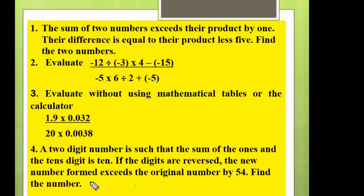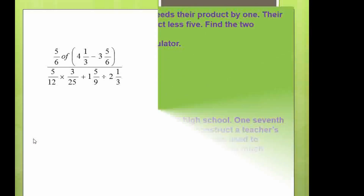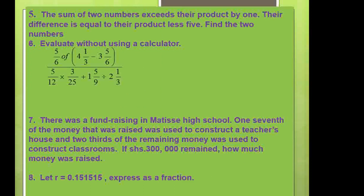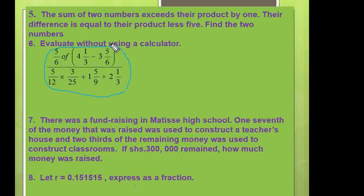You can go ahead and write down those assignments in your exercise book. Question number five: the sum of two numbers exceeds their product by one; their difference is equal to their product less five — find the two numbers. Question number six: evaluate without using a calculator — the fraction shown here.